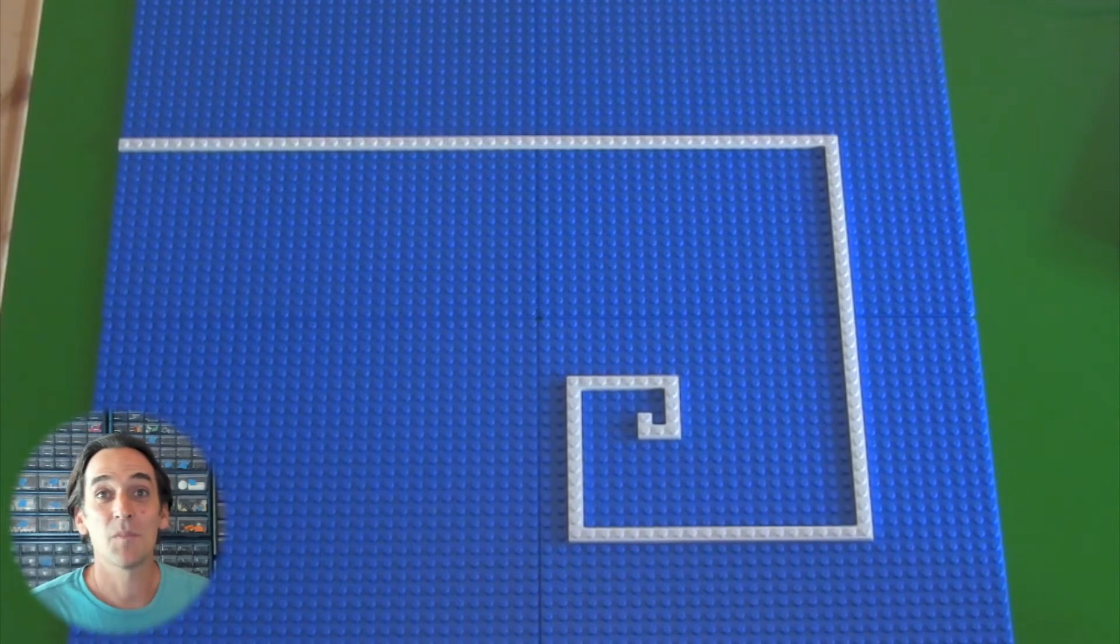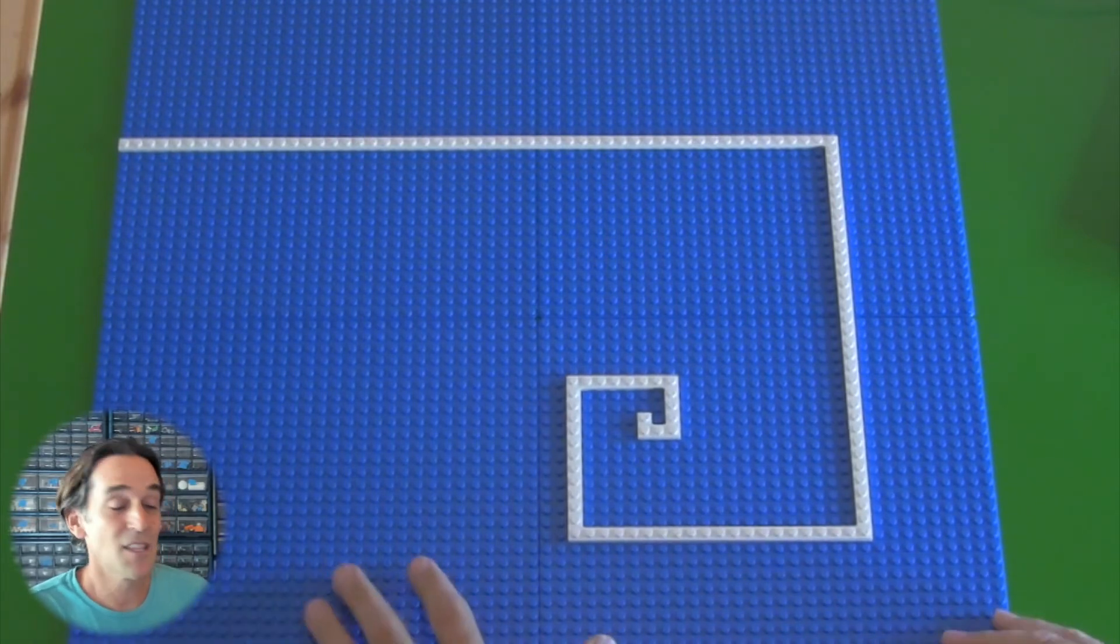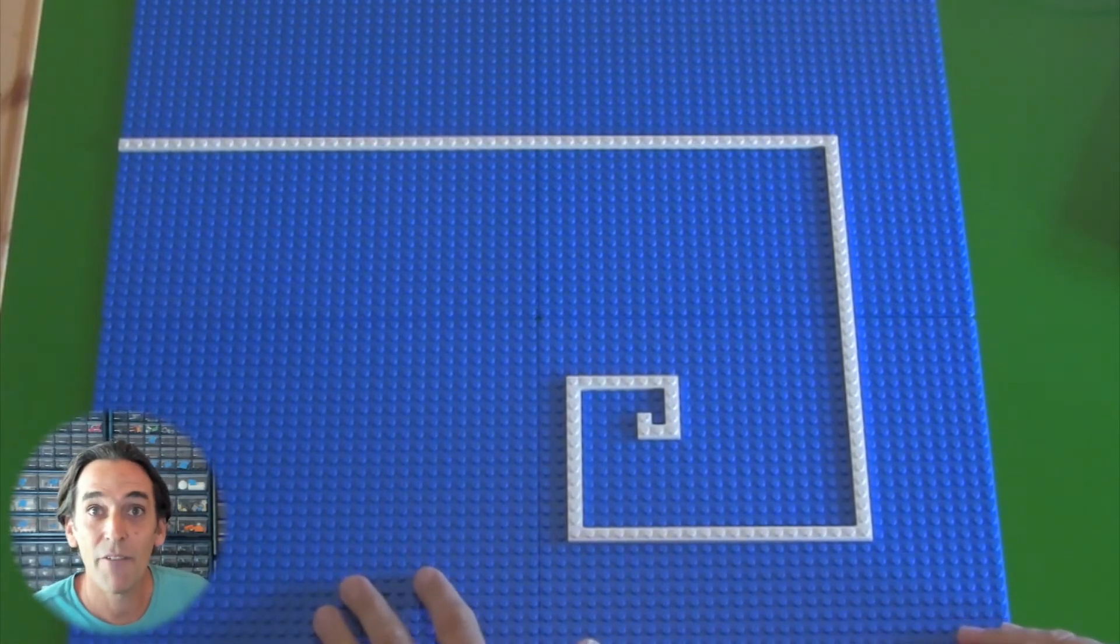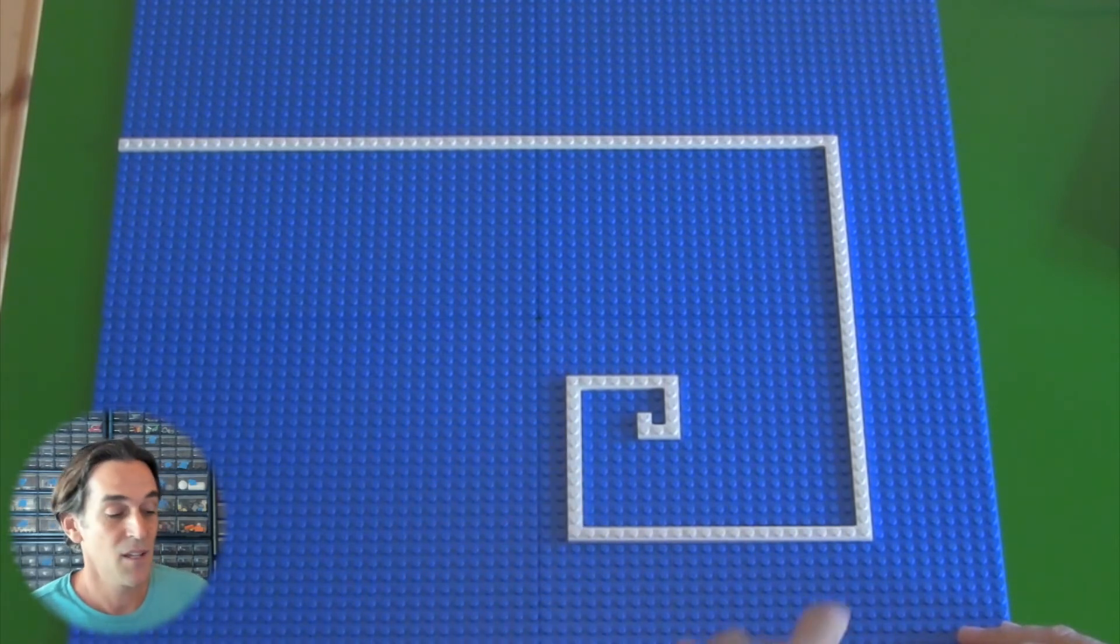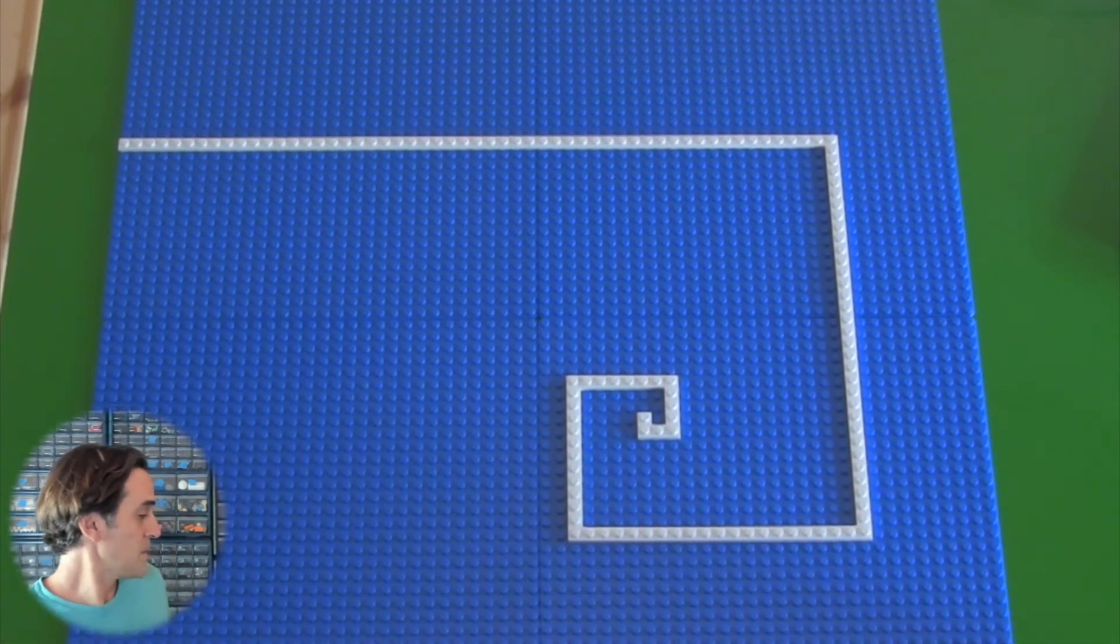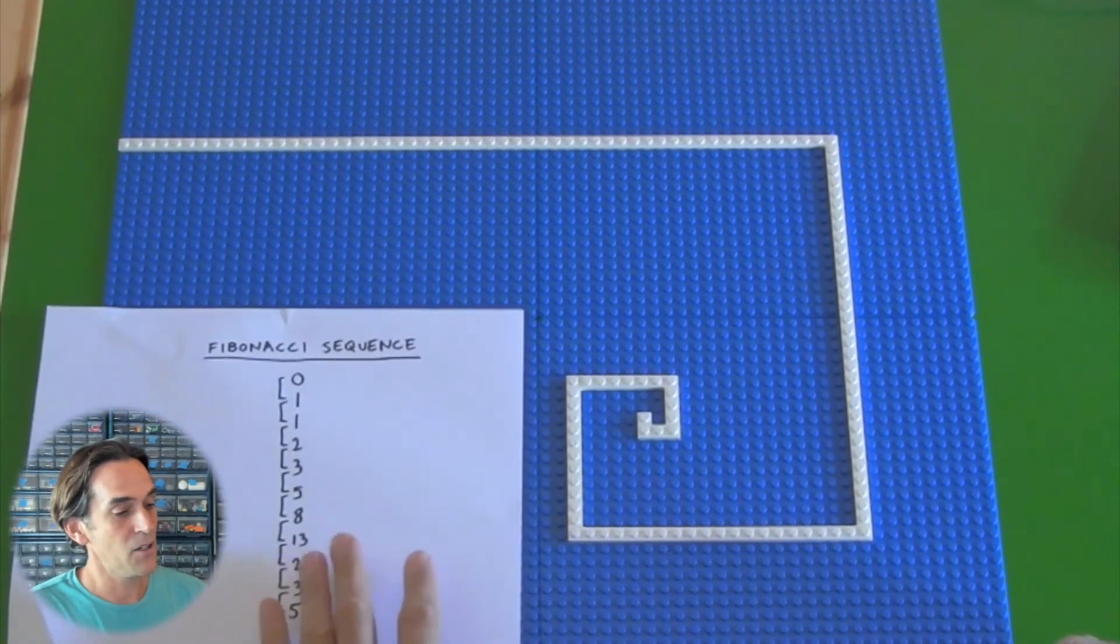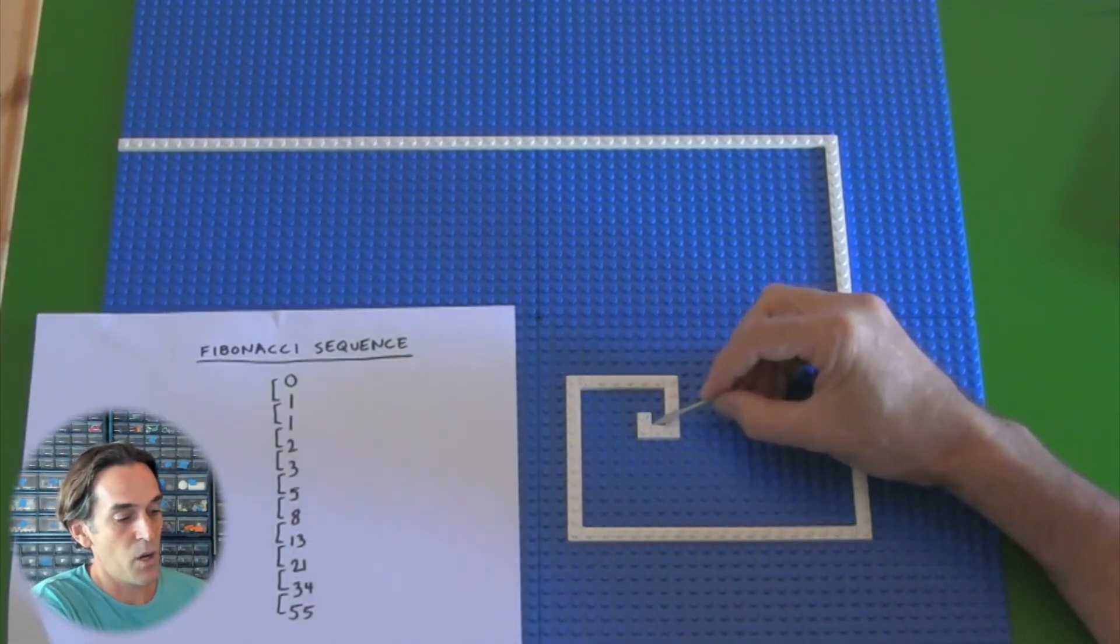So here is a Fibonacci spiral built out of Lego. You can see that the base plate works really well like the graph paper, because you can just count the studs and follow the Fibonacci sequence around. So if you look at it again here, you can see it.